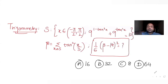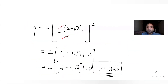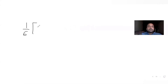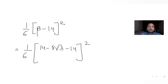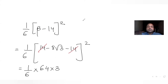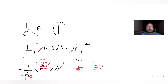Now substituting into the expression (1/6)·(β - 14)²: with β = 14 - 8√3, we get (14 - 8√3 - 14)² = (-8√3)² = 64·3 = 192. Then (1/6)·192... giving the final answer as 32.